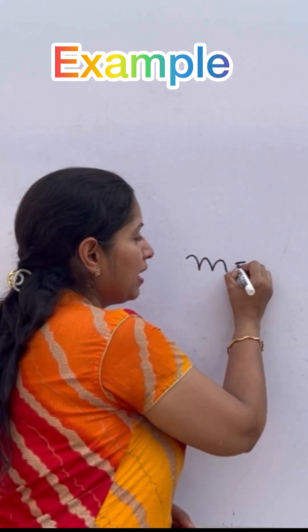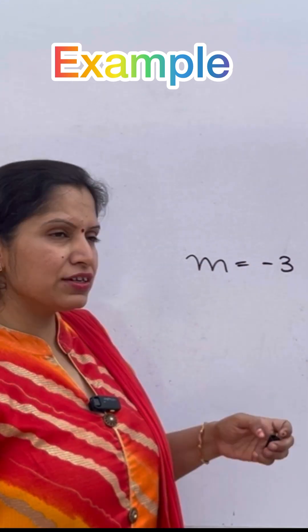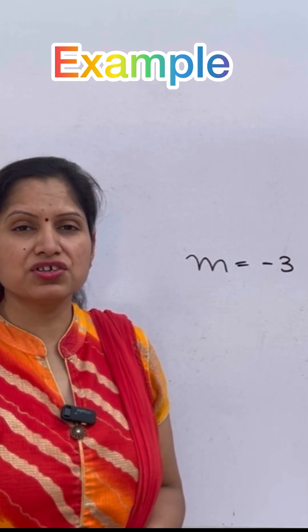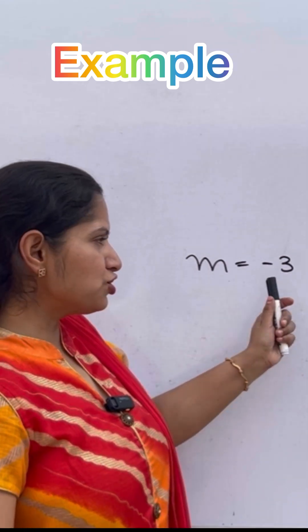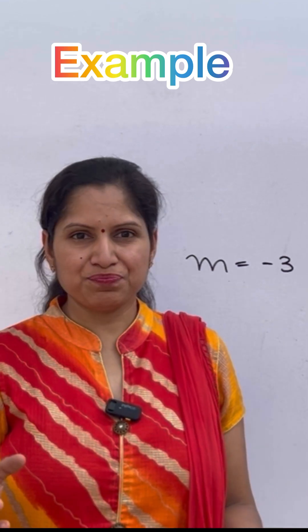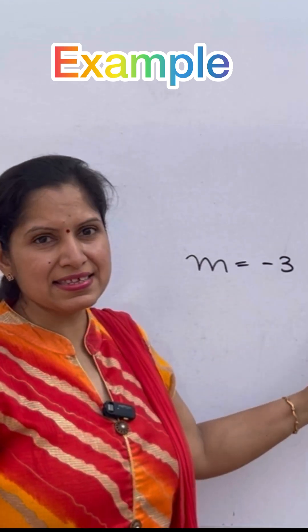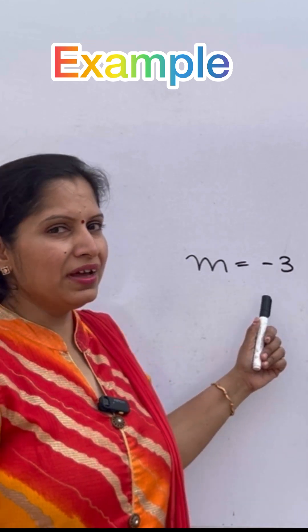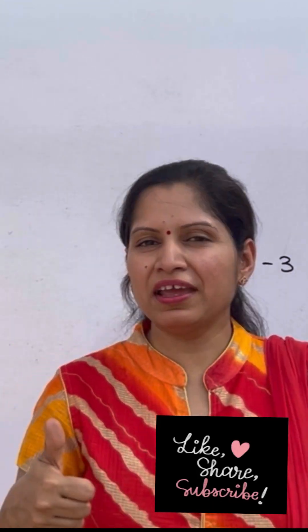For example, if the value of magnification is minus 3, the minus sign shows that the image is real and inverted, and the 3 shows that the image is enlarged. So we have to interpret both the value and the sign separately. Remember that this will help you in solving numericals.